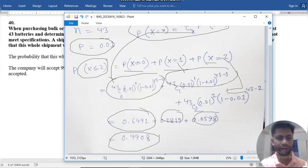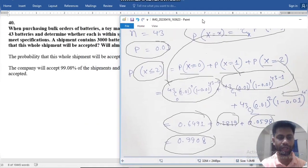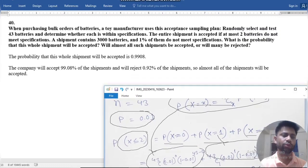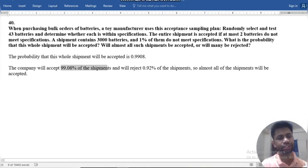So, the correct answer is 0.9908. The probability the company will accept the shipment is 0.9908.